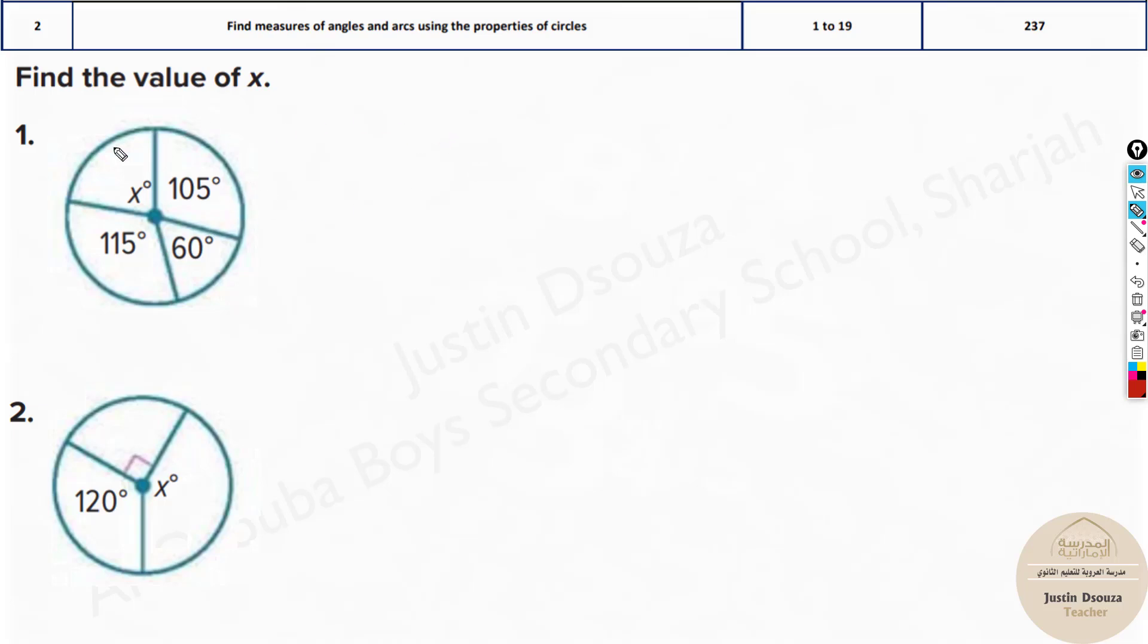It's very simple. We know the sum of all the angles is 360 degrees, right? So 360 minus 105 minus 60 minus 115 will give you the x angle. So that's it, add them all up and subtract them from 360 and you should get x degrees.